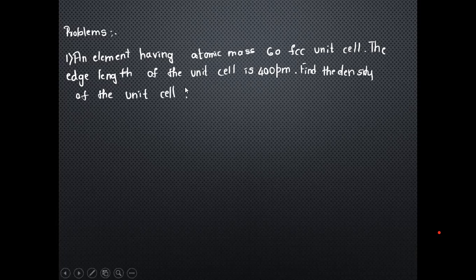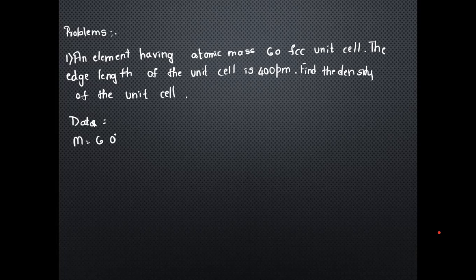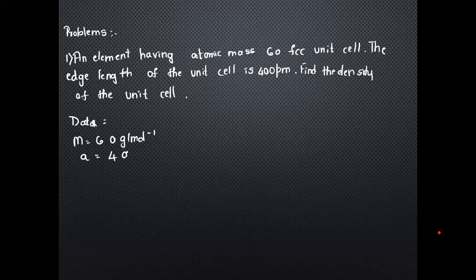The data given: atomic mass M = 60 g/mol; unit cell type: FCC; edge length a = 400 pm = 400 × 10⁻¹⁰ cm. We need to find the density. Using the formula D = ZM / (a³ × Nₐ), and for FCC the number of atoms per unit cell Z = 4.